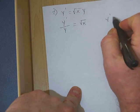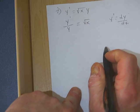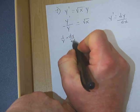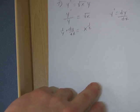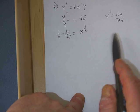Remembering that y prime equals dy/dx, I can write this as 1 over y times dy/dx equals x to the 1/2, getting rid of that square root symbol because I'm going to have to integrate it anyway.